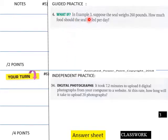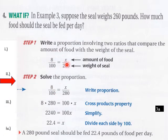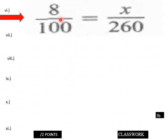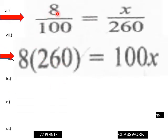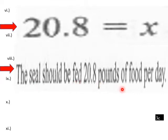Now let's go into our guided example. Example three: suppose a seal weighs 260 pounds — how much food should the seal be fed per day? Our original proportion was 8 over 100 equals x over 280. We replace 280 with 260, then solve for x. 8 over 100 equals x over 260. Cross multiply: 8 times 260 equals 100x, which is 2080 equals 100x. Divide by 100 and we get 20.8 pounds of food the seal should be fed per day.